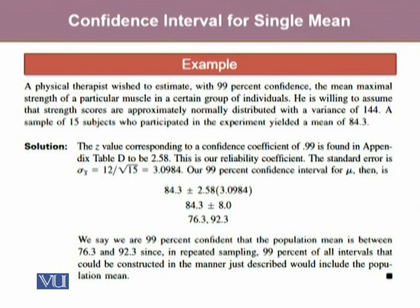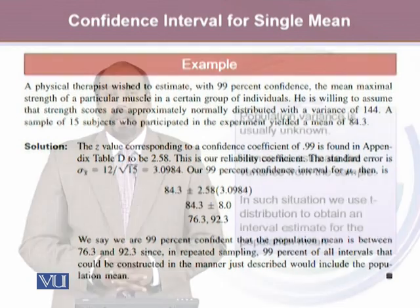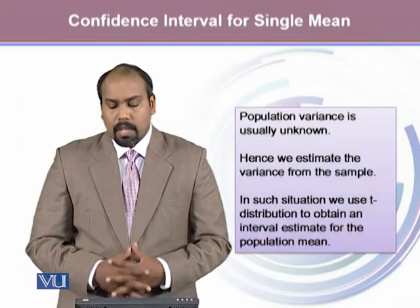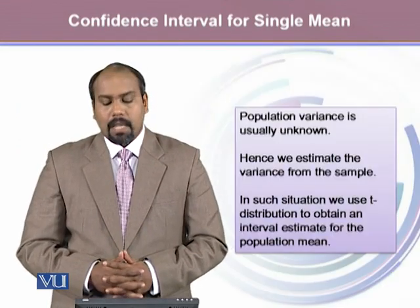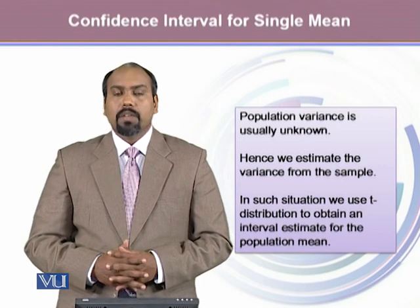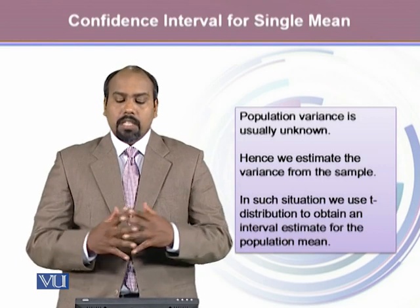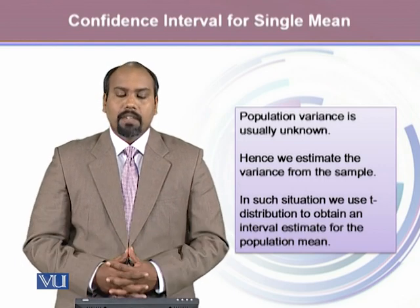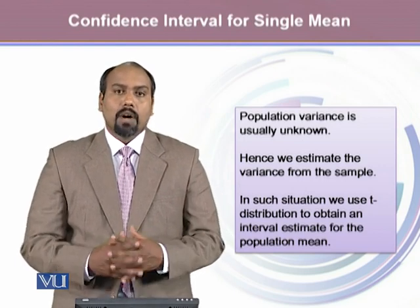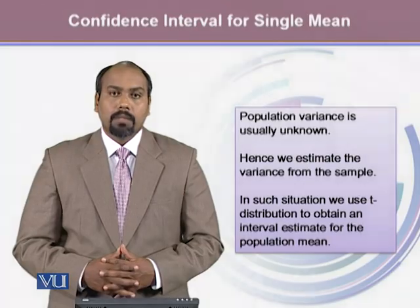Population variance is usually unknown. Hence, we estimate the variance from the sample. In such a situation, we use the t-distribution to obtain an interval estimate of the population mean.